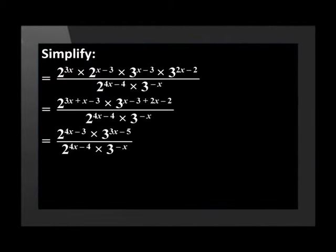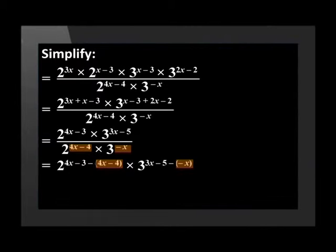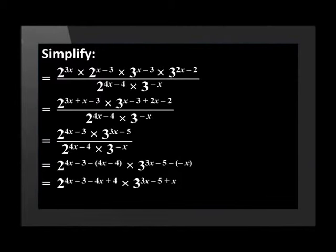On top we now have 2 to the power of 4X minus 3 times by 3 to the power of 3X minus 5. We are dividing like bases so we can subtract the exponents. This will give us 2 to the power of 4X minus 3 minus 4X minus 4 times by 3 to the power of 3X minus 5 minus negative X. Now we have 2 to the power of 4X minus 3 minus 4X plus 4 times by 3 to the power of 3X minus 5 plus X. And then the final answer will be 2 to the power of 4X minus 5.